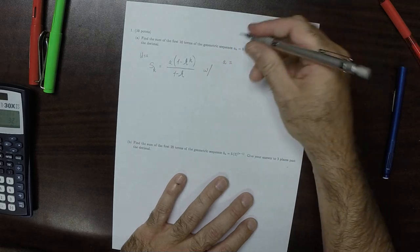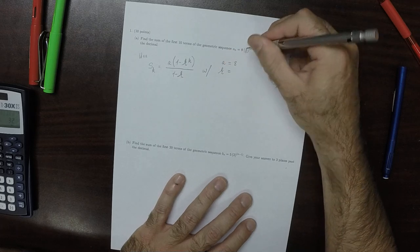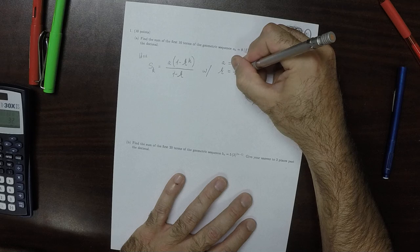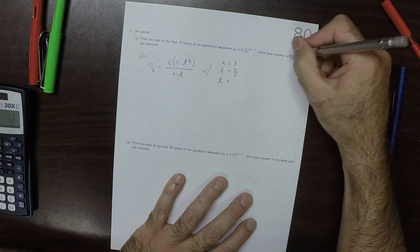With A is 8, R is 4 over 5, and K is 10.